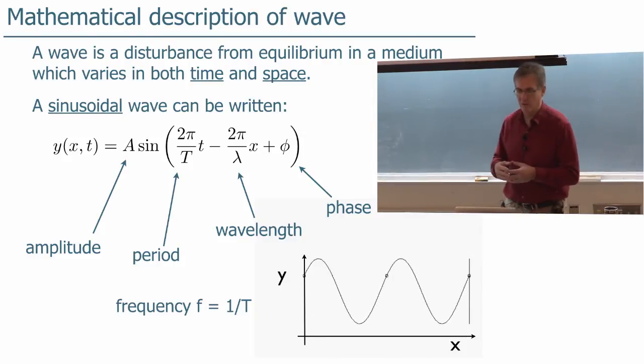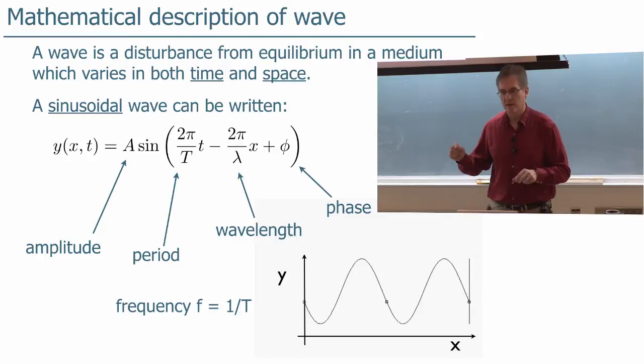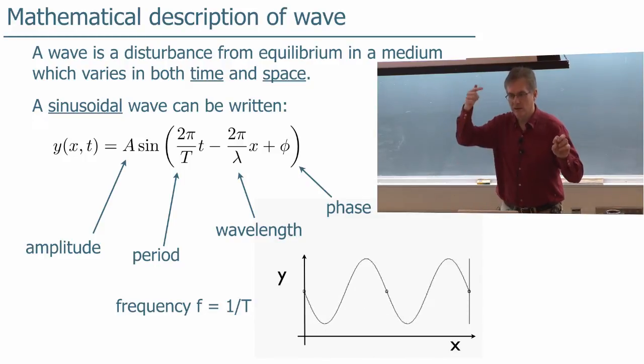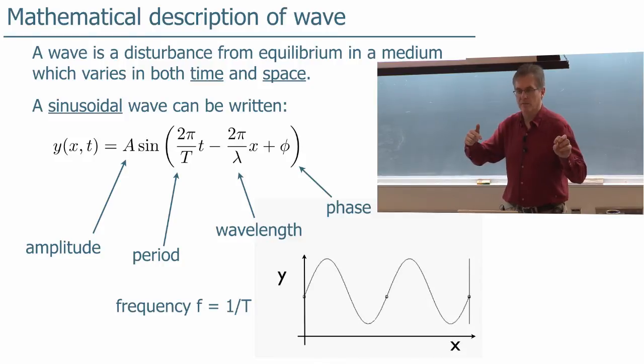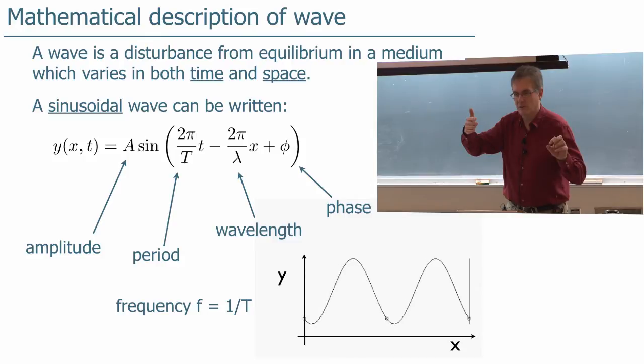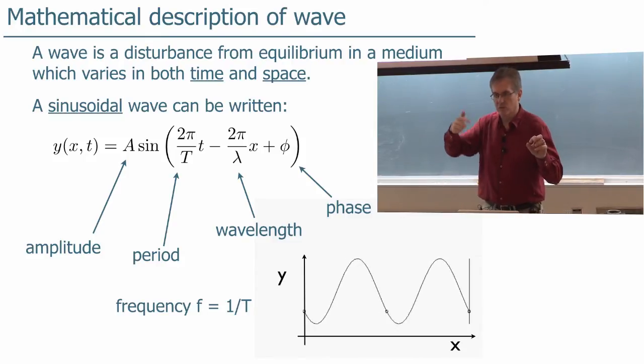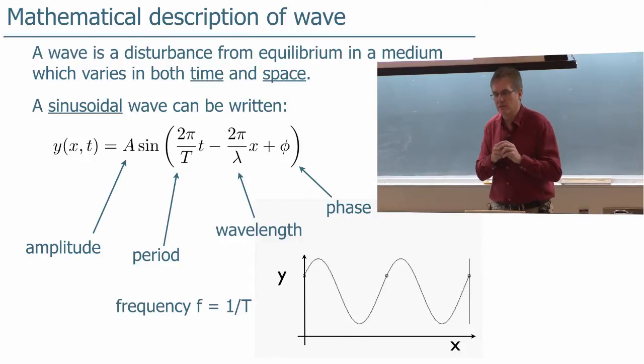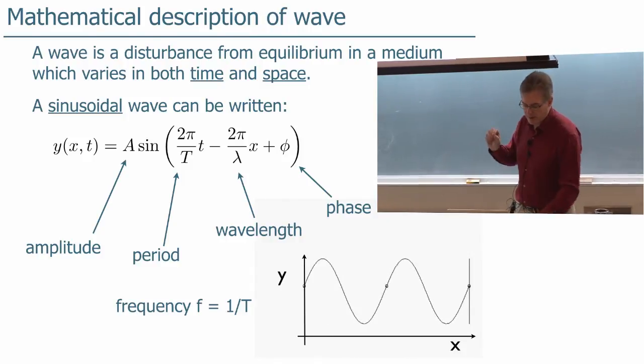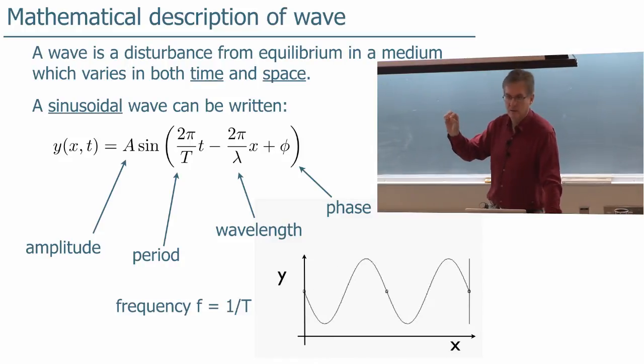The argument is 2π over the period times t, which might be better written as 2π times little t over big T. Because if you think about it, little t, as little t goes from zero, time equals zero to the period big T, that little t over big T goes from zero to one, multiplying the 2π. Okay, so 2π t over big T minus 2π x over lambda.